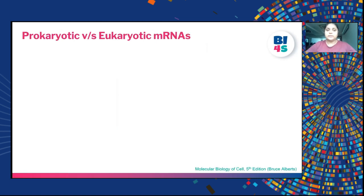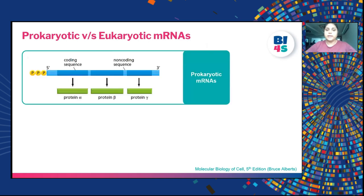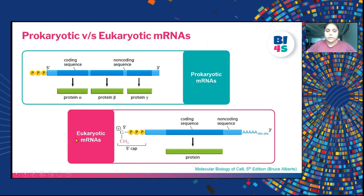There are differences between prokaryotic and eukaryotic mRNAs. In prokaryotic mRNAs, one long stretch of nucleotides is translated into multiple proteins — this is called a cistron. In eukaryotic mRNA, one strand of RNA codes mostly for one type of protein and has a 5' cap, a poly-A tail, a coding sequence and a non-coding sequence. The coding sequence is the part translated into protein; the non-coding sequence is not.